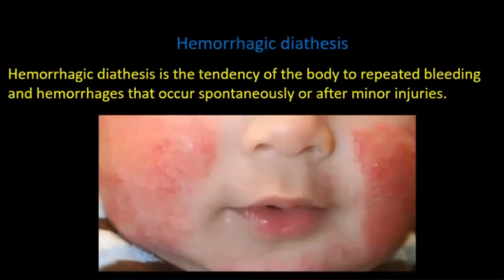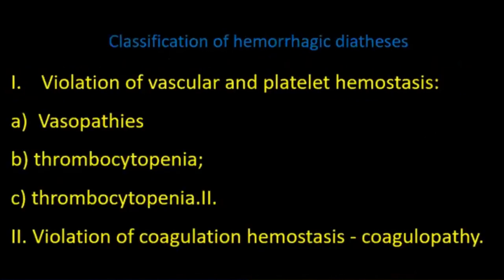Hemorrhagic diathesis is a tendency of the body to spontaneous bleeding or hemorrhage following minor injuries. Classification of hemorrhagic diathesis involves violation of vascular hemostasis.